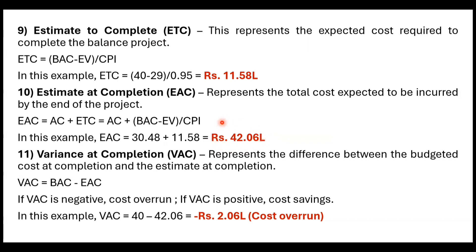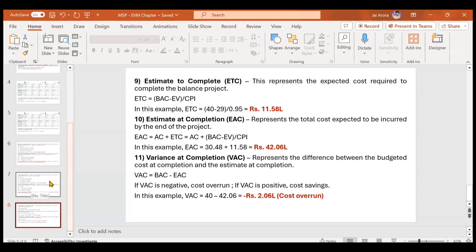Variance at Completion (VAC) = BAC − EAC. The project was budgeted at ₹40 lakh (BAC) but is expected to cost ₹42.06 lakh (EAC). If VAC is negative it indicates a cost overrun; if positive it indicates cost savings. In this example VAC = −₹2.06 lakh, meaning a cost overrun is expected by completion. That concludes the theory section on Earned Value Management.